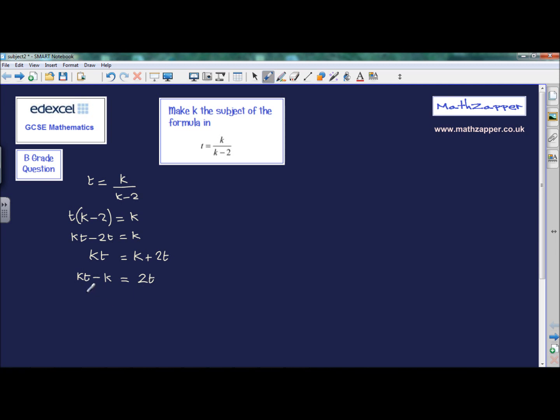Now what we do is we can factorize the left-hand side. We'll see that there's k in kt and there's also k in minus k. So we can take k outside of brackets. And what do we multiply k by to get kt? We multiply it by t. And what do we multiply k by to get minus k? We multiply it by minus 1. And this still is equal to 2t.